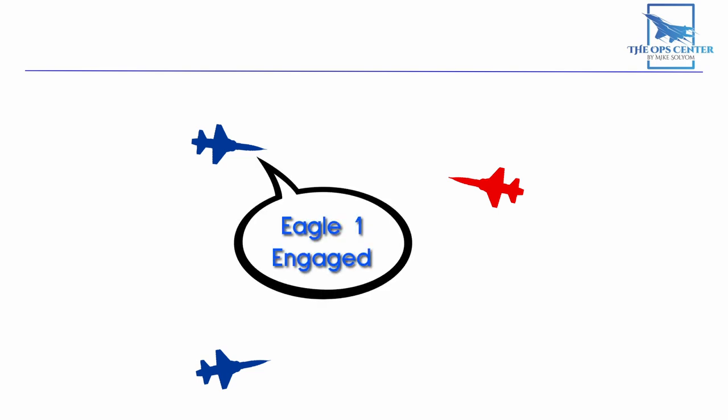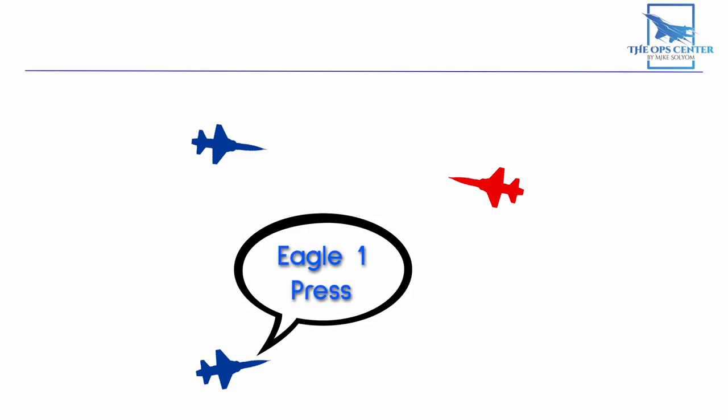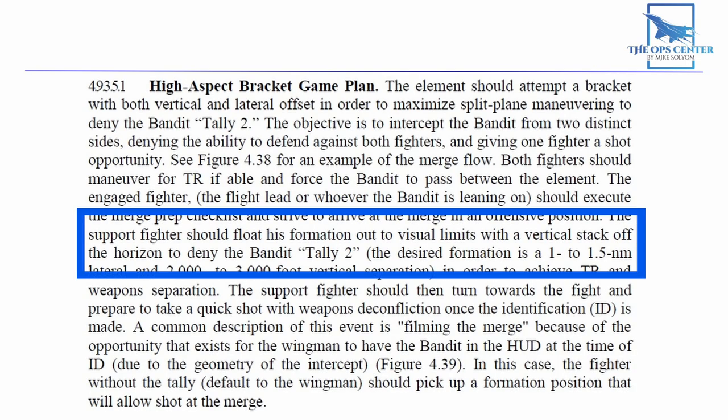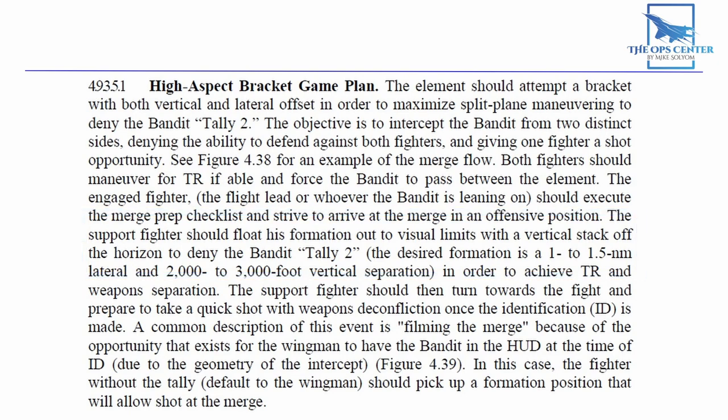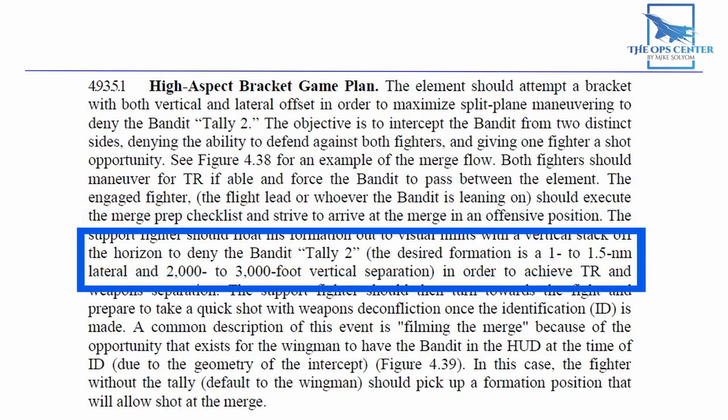Now that we see the bogeys clearly focused on lead, we can set our ACM roles with the radio call. That call from lead would sound like this. Eagle 1 engaged. The ACM roles are not set until an acknowledgement is sent. That acknowledgement from the wingman would go like this. Eagle 1 press. With that call, the wingman has now taken on the responsibility of being the support fighter. In a bracket game plan, you not only want to build separation horizontally, but vertically too. Here's how the Air Force describes it. The support fighter should float his formation out to visual limits, with the vertical stack off the horizon to deny the bandit tally to. The desired formation is 1 to 1.5 nautical miles lateral and 2,000 to 3,000 foot vertical separation.